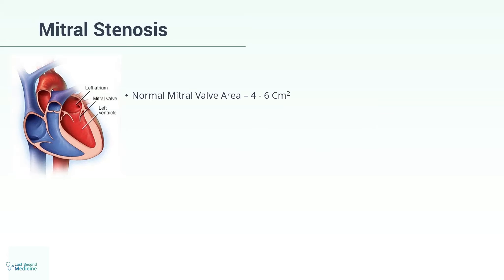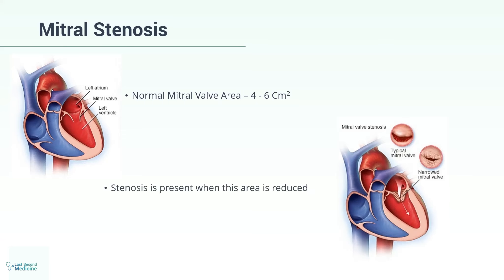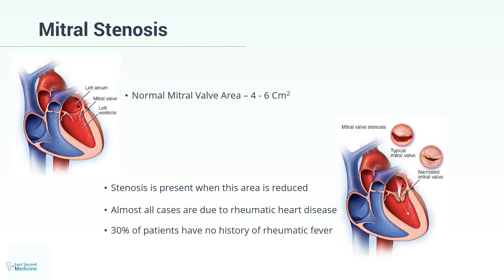The normal area of the mitral valve is 4 to 6 square centimeters. Stenosis is said to be present when this area is reduced. Almost all cases of mitral stenosis are due to rheumatic heart disease, but 30% of patients have no history of rheumatic fever.